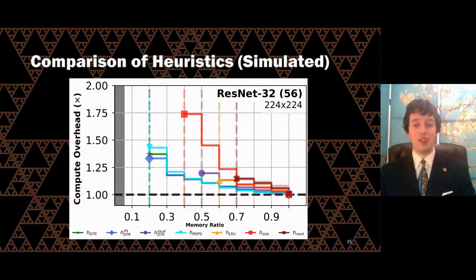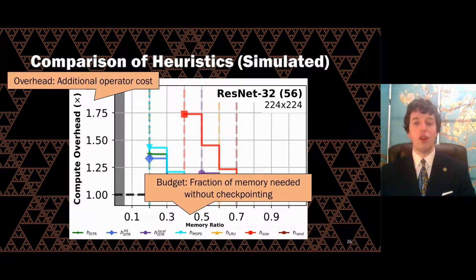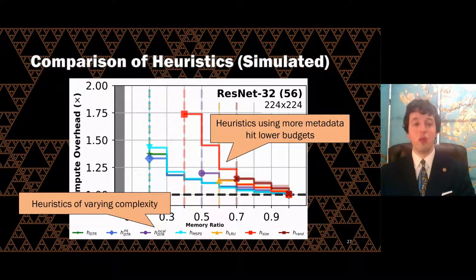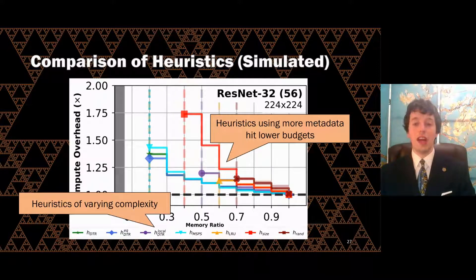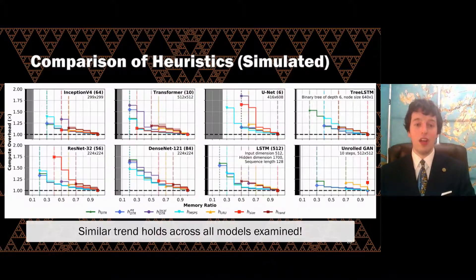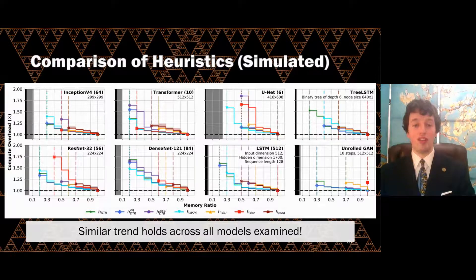To compare the effectiveness of different heuristics against each other, we ran simulations of DTR on logs of the computations for various models. For different heuristics, we compared the overhead in terms of the costs of any additional tensor operators to the memory budgets they can handle, expressed as fractions of the total memory required to train the model without checkpointing. We considered several heuristics, including ones inspired by past work and variants of our cost-staleness-size heuristic. We observed that heuristics taking into account more metadata are able to accommodate lower budgets, but nevertheless, even simple heuristics like the humble LRU can sometimes reduce the amount of memory needed.